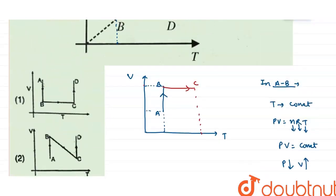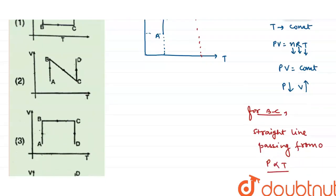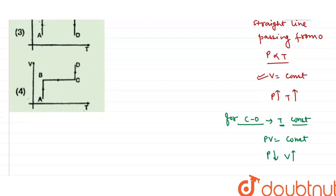So the graph for C to D shows volume increasing — an upward graph with temperature constant. Volume at point C is less than volume at point D. The complete VT graph goes A to B, B to C, then C to D. Just check the options — the fourth option is the correct answer. Thank you.